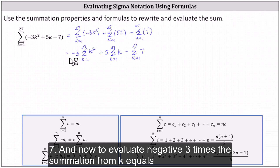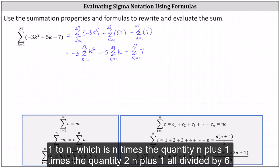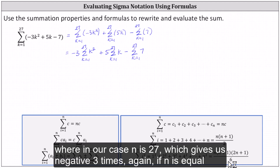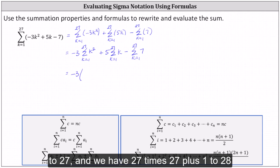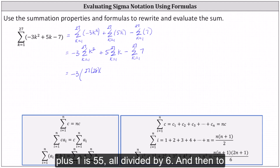Now to evaluate negative three times the summation from k equals one to 27 of k squared, we'll use the formula for the summation of i squared from i equals one to n, which is n times the quantity n plus one times two n plus one, all divided by six, where n is 27. This gives us negative three times 27 times 28 times 55, all divided by six.